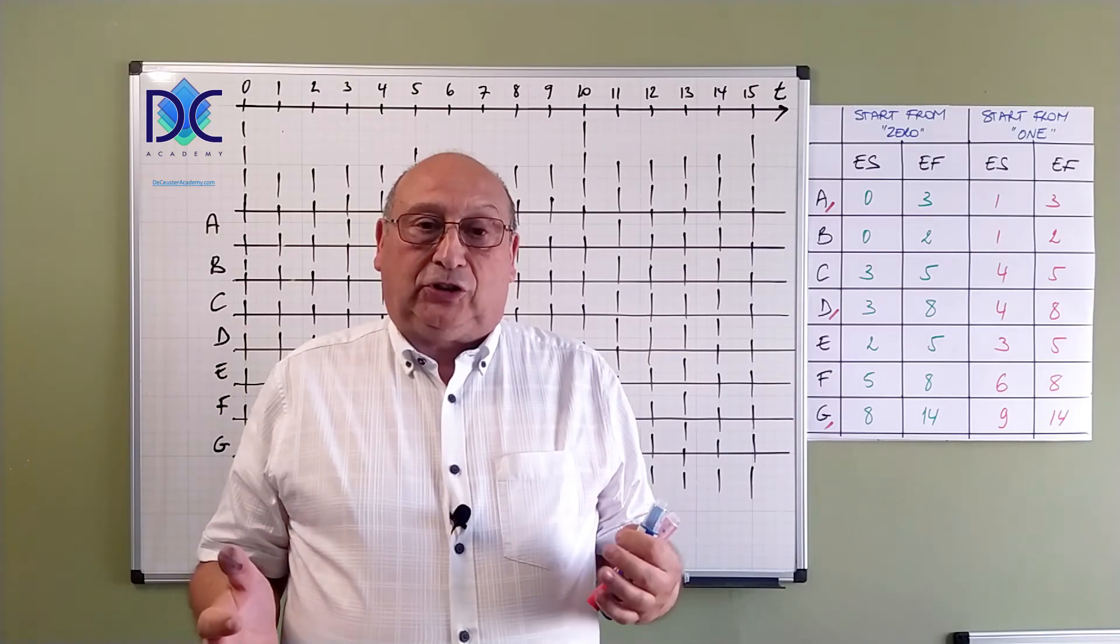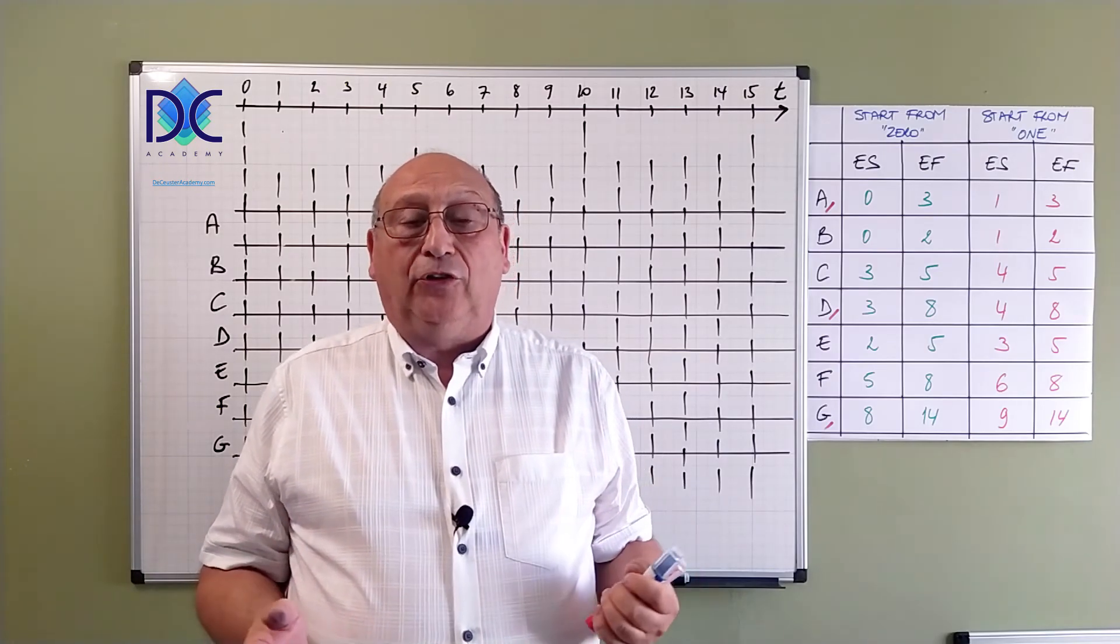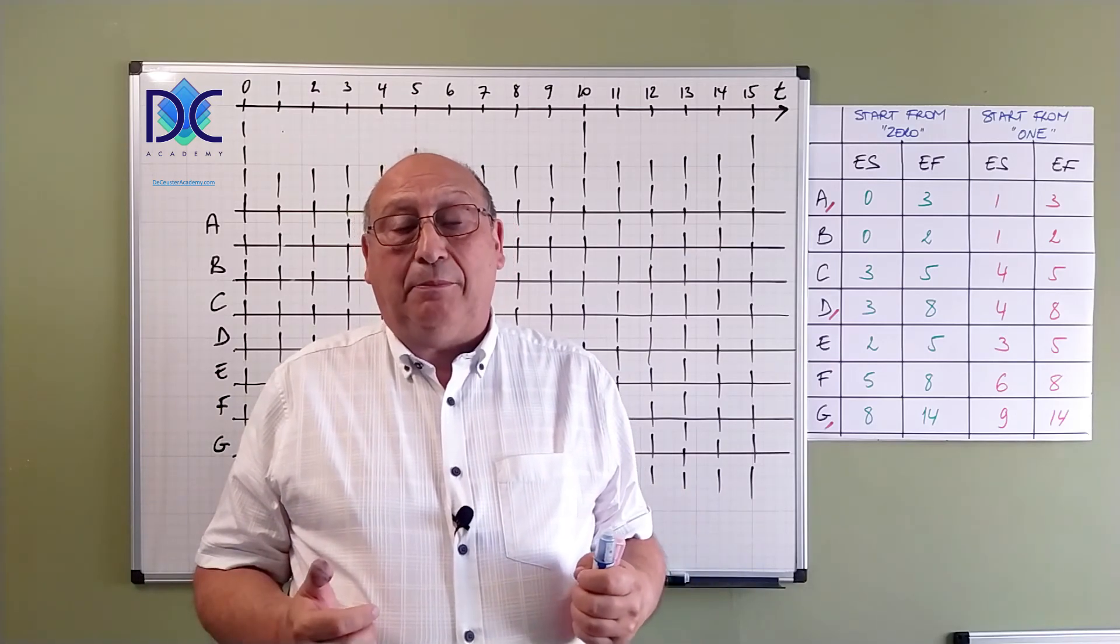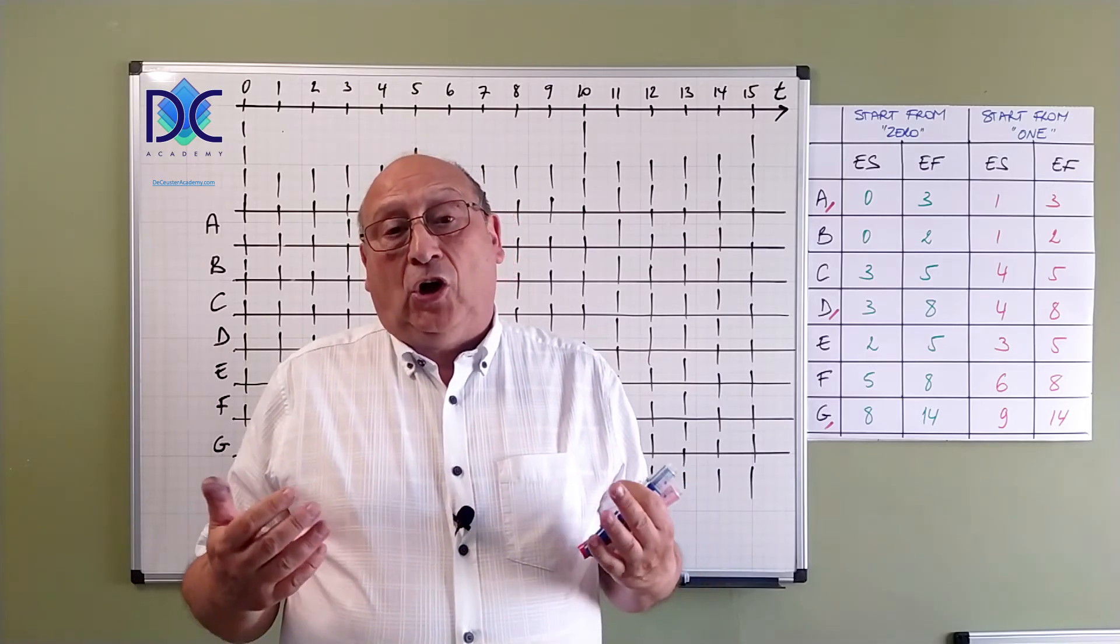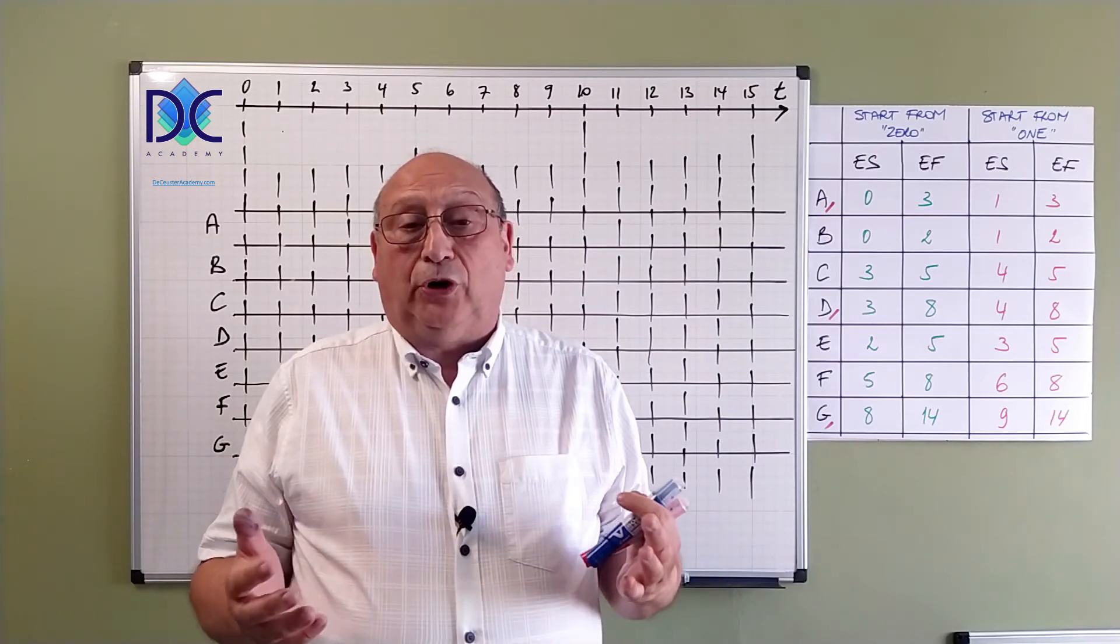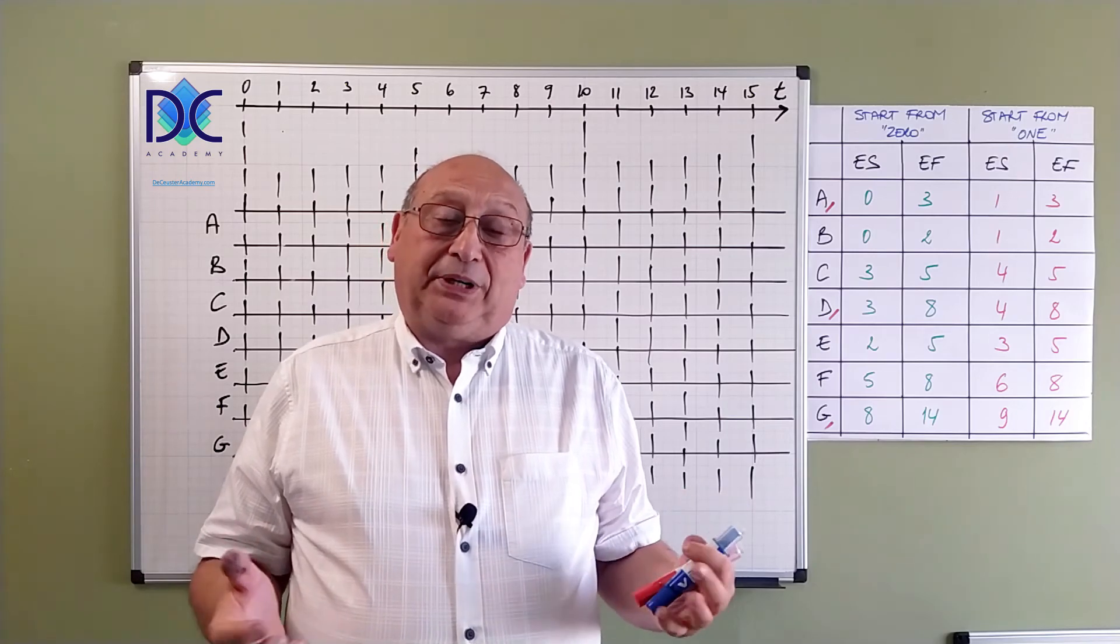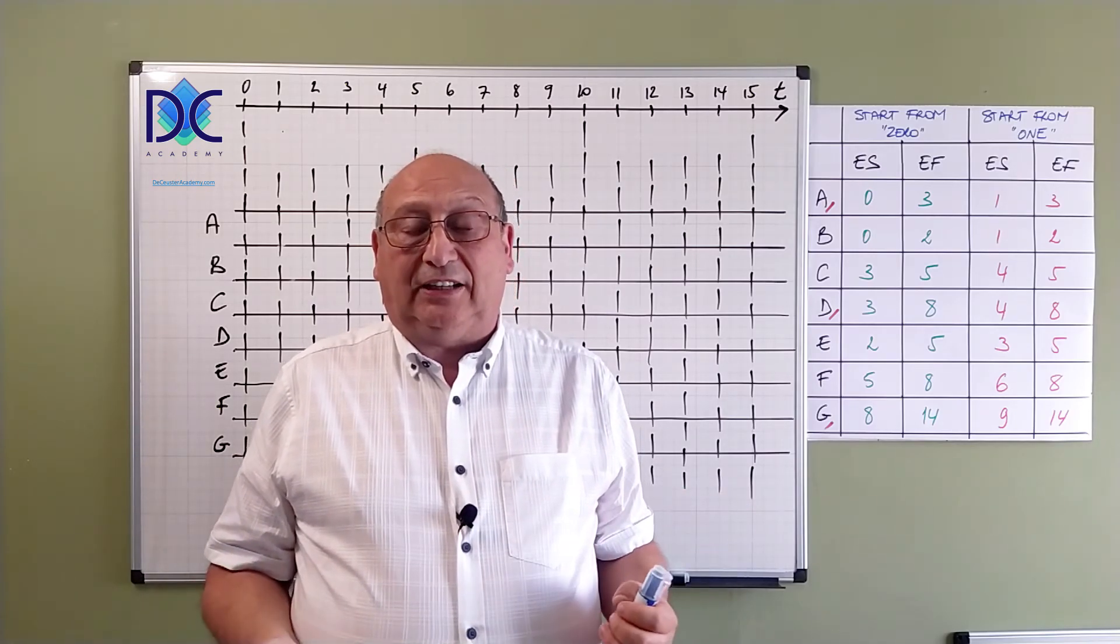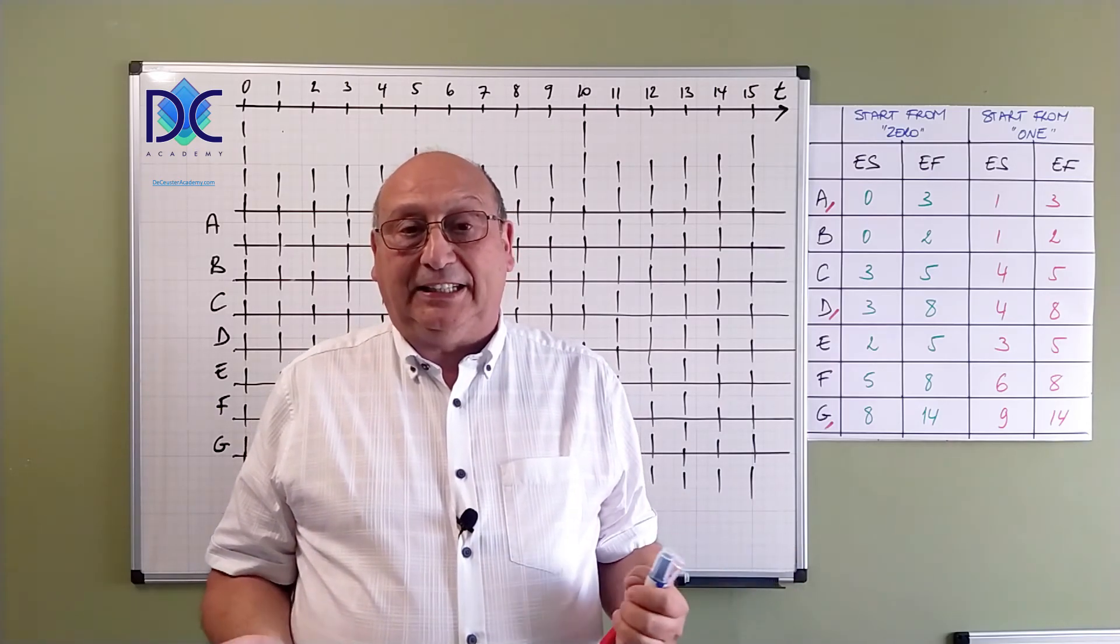The first video in this series was about the activity on the arrow method, how we created an arrow diagram using the precedence information of the activities. The second video, we were applying the same information on the precedence diagramming method and calculating the early start, early finish, late start and late finish of a series of activities.